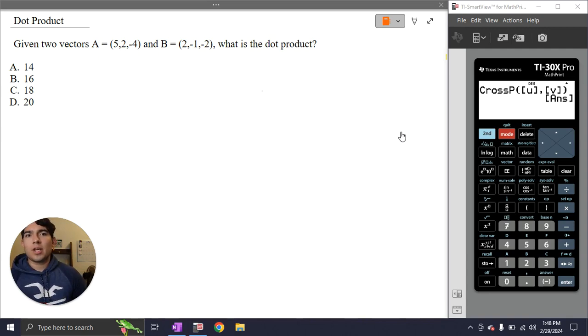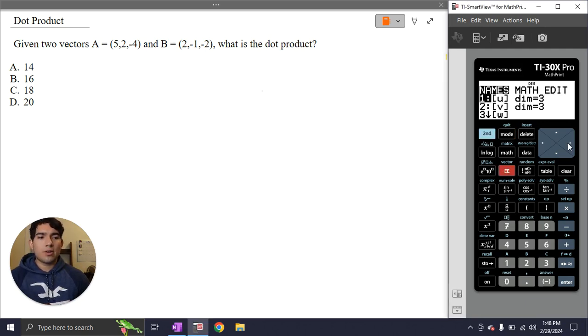So now let's say you were asked to solve for a dot product instead of a cross product. The process would be the same. As a reminder, in order to put the vectors into the calculator, you just go to second, vector, and then you go to the edit tab. And that's where you can put your vectors into the calculator.